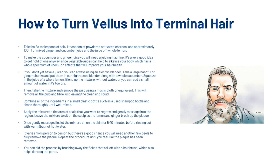If you don't yet have a juicer you can always use an electric blender. Simply take a large handful of ginger chunks and put them in a high-speed blender along with a whole cucumber. Squeeze in the juice of a whole lemon and then blend the mixture without water, or add a small amount of water if it's too dry. Then take the mixture and remove the pulp using a muslin cloth or equivalent — this will remove all the pulp and fibre, just leaving the cleansing liquid. Combine all of the ingredients in a small plastic bottle such as a used shampoo bottle and shake thoroughly until well mixed. Then apply the mixture to the area of the scalp you want to regrow and gently massage it into the region, then leave the mixture to sit on the scalp as the lemon and ginger break up the plaque.